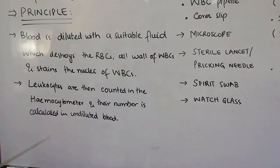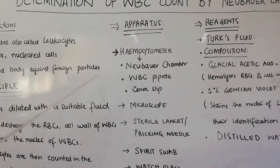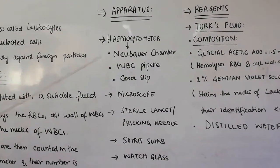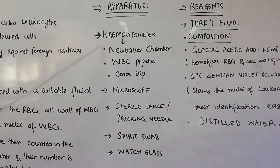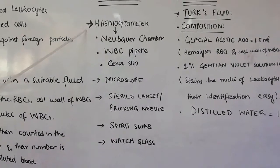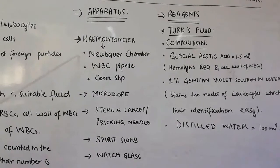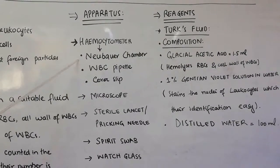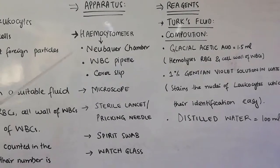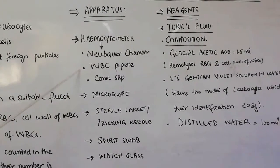Moving on, we will discuss the apparatus used in this practical. The first apparatus is the hemocytometer itself, which consists of three parts: first is the Neubauer chamber, second is the WBC pipette, and the third is the cover slip.